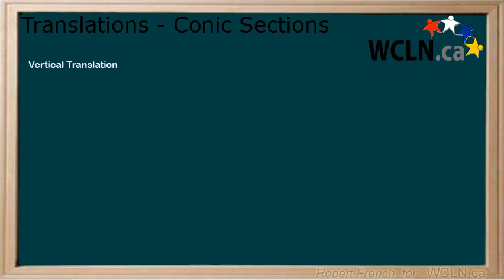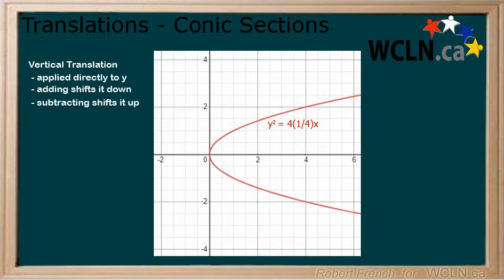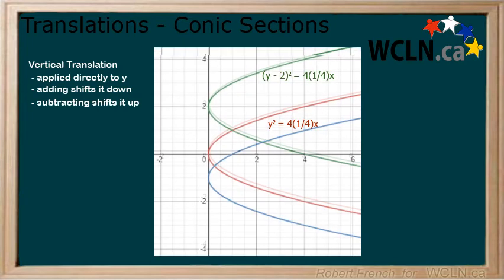Next, we will look at a vertical translation. These are done by adding or subtracting directly to Y. You add to move the function down, and subtract to move it up. Consider the following parabola. To move it 2 up, we subtract 2 directly from Y. To move it 1 down, we add 1 directly to Y.